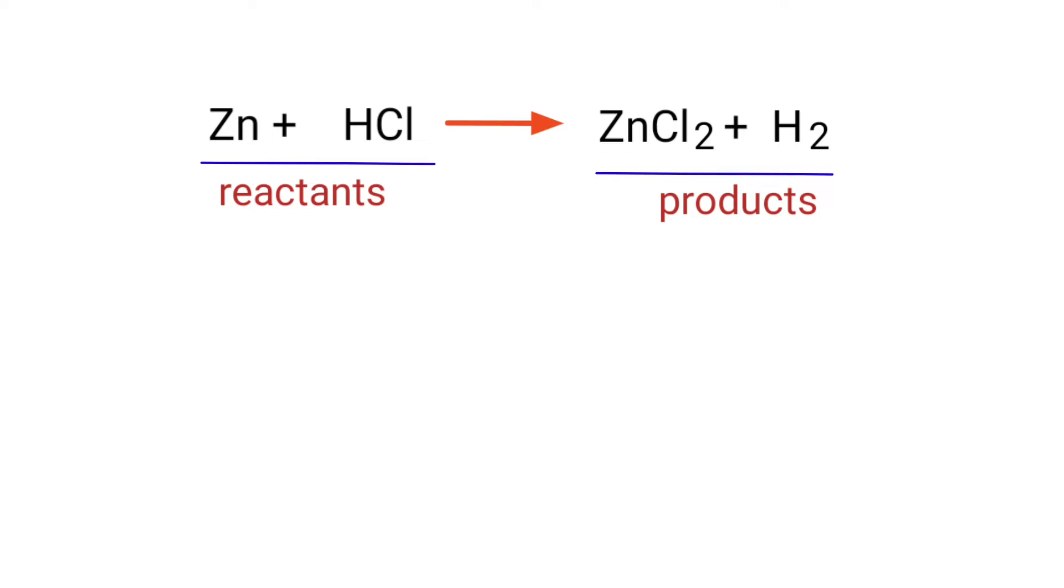In this equation, the reactants are Zinc and Hydrogen Chloride, and the products are Zinc Chloride and Hydrogen.